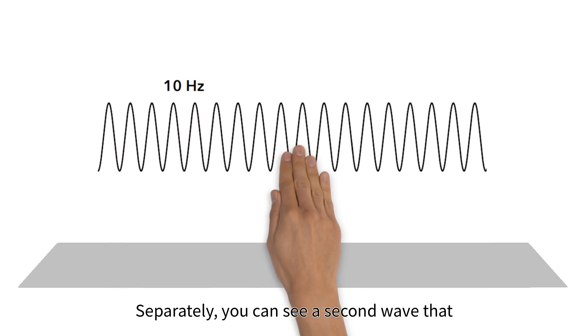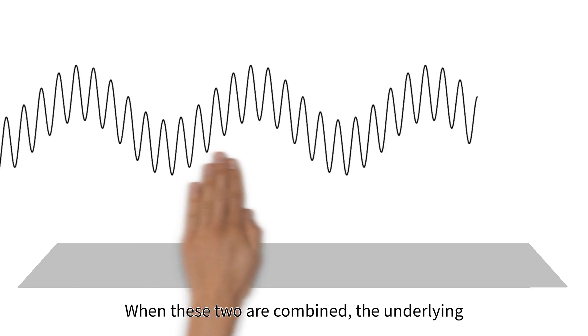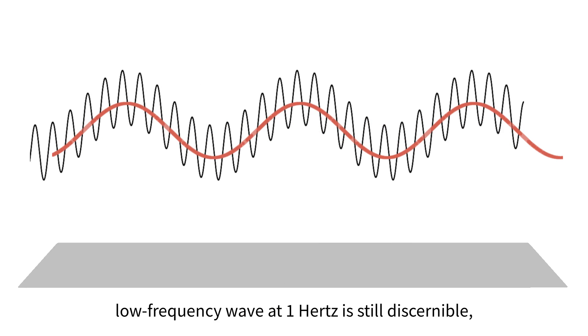Separately, you can see a second wave that has a frequency of 10 Hz. When these two are combined, the underlying low frequency wave at 1 Hz is still discernible, along with the higher frequency wave at 10 Hz.